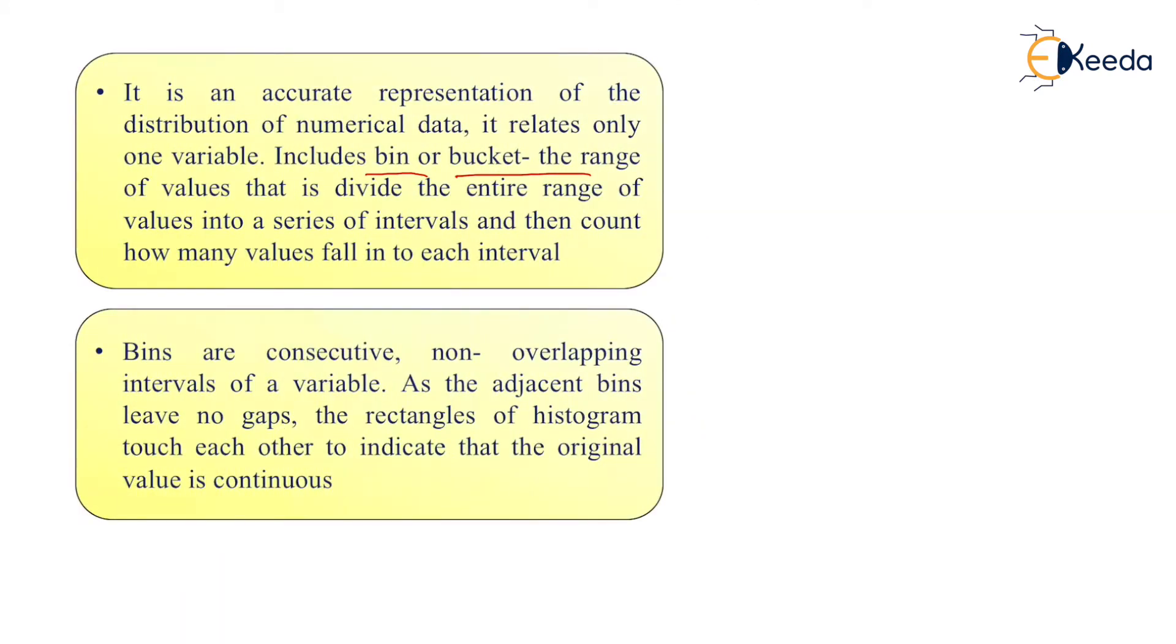Next is, bins are consecutive or non-overlapping intervals of a variable. As the adjacent bins leave no gaps, the rectangles of a histogram touch each other to indicate that the original value is contiguous. If you found the gap between each value, that means that values are not having bins with each other. That is why it is called a histogram, otherwise it will get called as a bar graph.